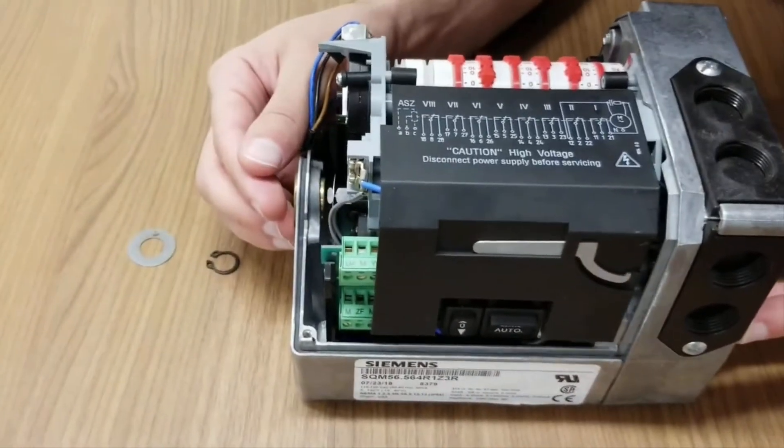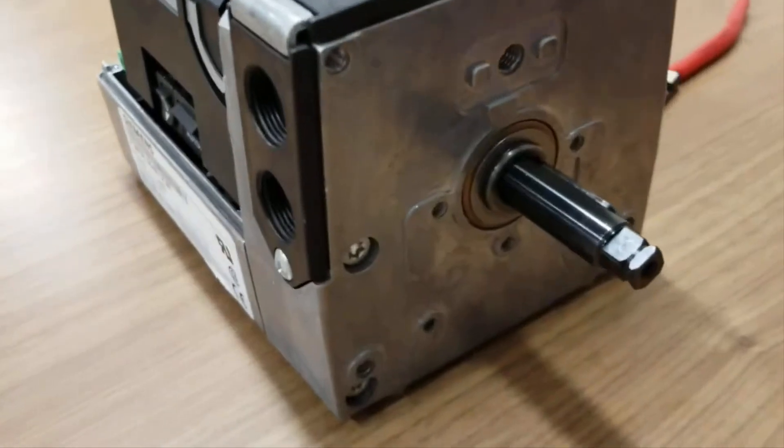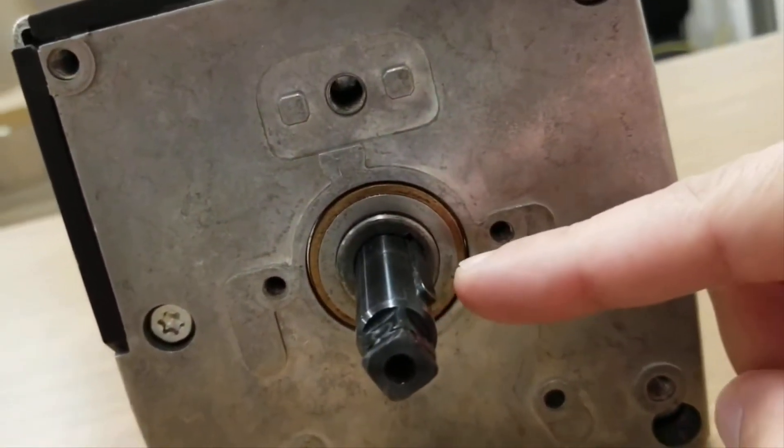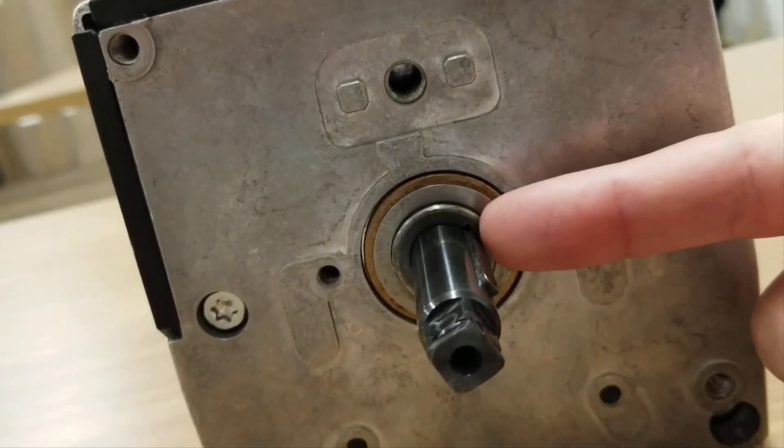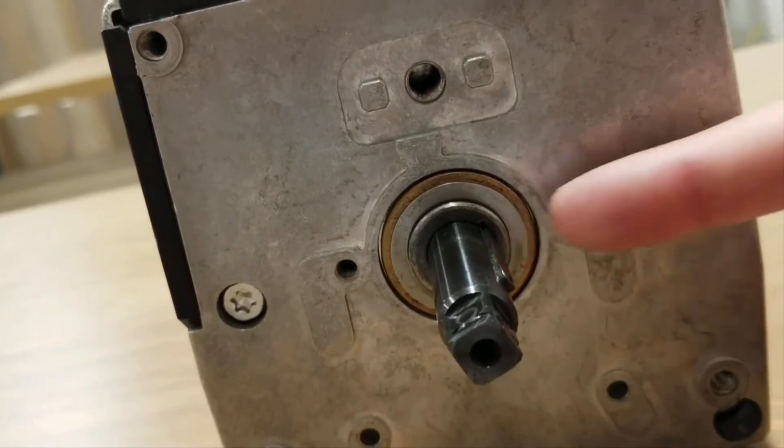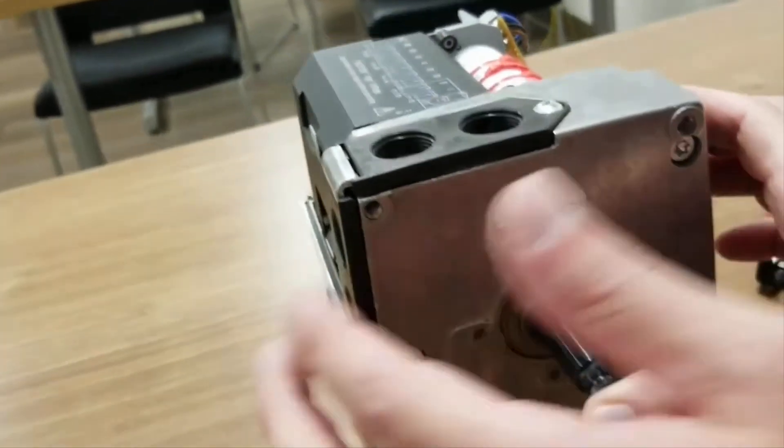Once the washer is on the shaft, we're going to push in the shaft the rest of the way on the actuator. One thing to keep in mind, though, is this key needs to line up with this keyhole. So the key on the shaft needs to line up with the keyhole on the actuator, like so. And then just push it in the rest of the way.